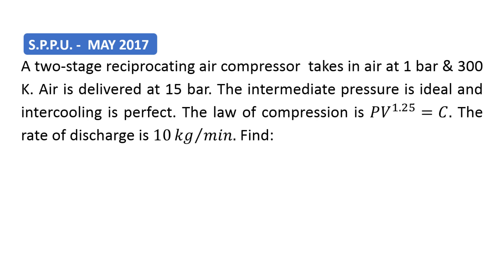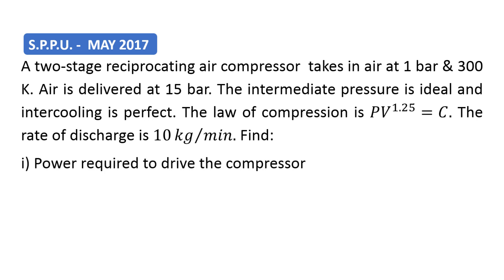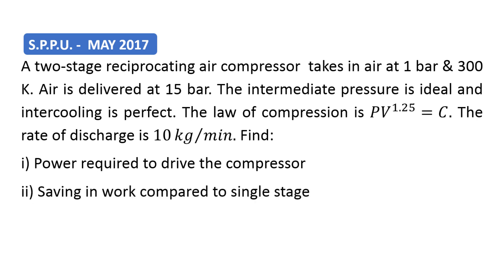A two-stage reciprocating air compressor takes in air at 1 bar and 300 Kelvin. Air is delivered at 15 bar pressure. The intermediate pressure is ideal and intercooling is perfect. The law of compression is PV raised to 1.25 equals constant. The rate of discharge of air is 10 kg per minute. We have to find: the power required to drive the compressor, the saving in work compared to single-stage compression, and the heat rejected in the intercooler.